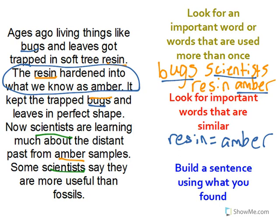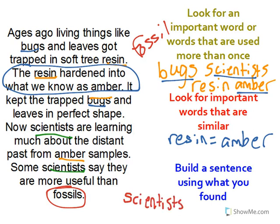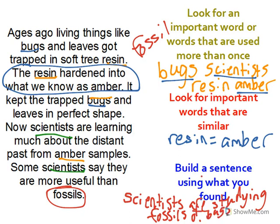But before we move on, let's look back through the story and see if we see any other words that might be super important. Take a minute to look for one. What about the word fossils? So if we add the word fossils, we have bugs, scientist, amber, and fossils. I would take this and turn it into a sentence that says scientists are studying fossils of bugs in amber. This would be my central idea.